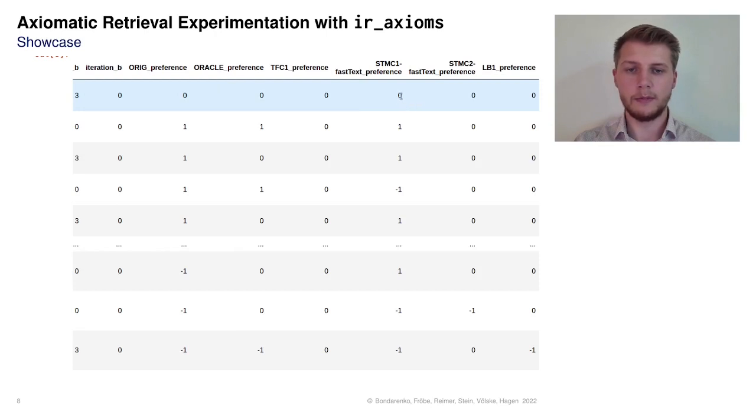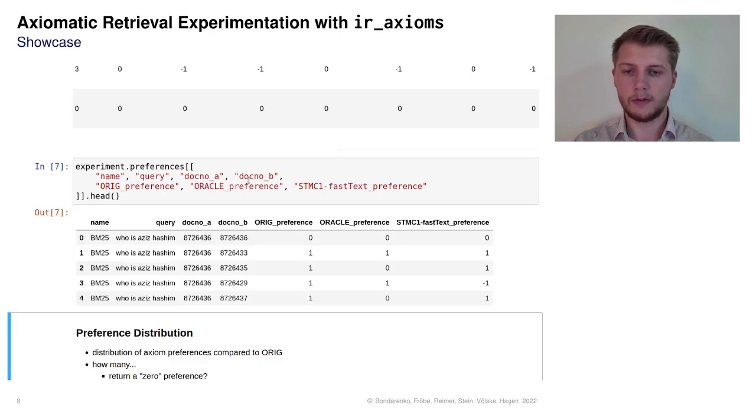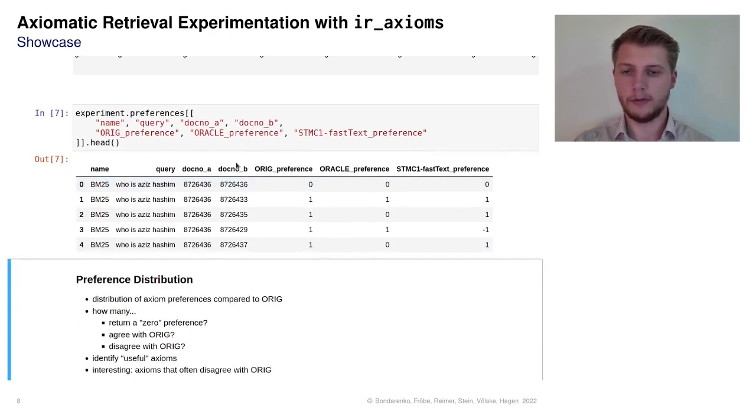This data frame contains the document pairs in rows and preferences of all axioms in separate columns. Here, a preference of 0 means that the axiom has no preference. 1 means that the original order should be preserved and -1 means that the documents should be swapped. The data frame also includes the original ranking preference called ORIG and the preference induced by relevance judgments, called ORACLE. We can select columns from the data frame to focus on just some of the axioms. For example, ORIG, ORACLE, and STMC1.